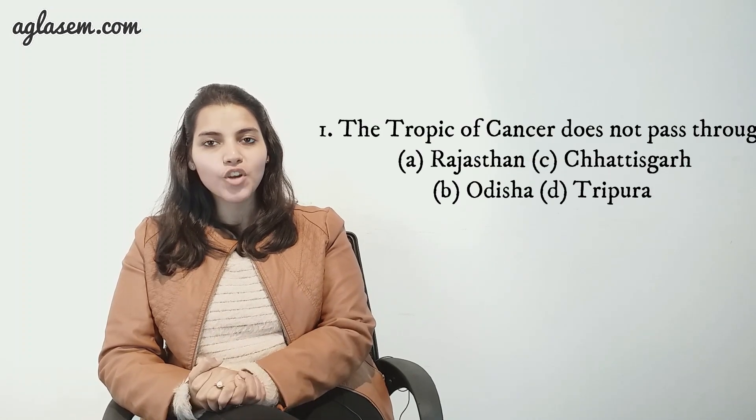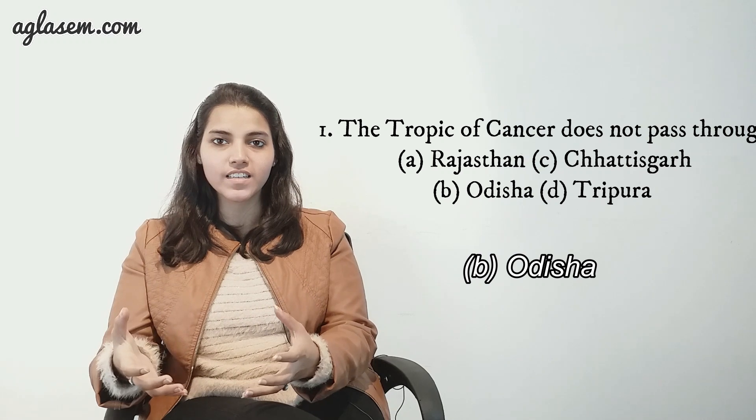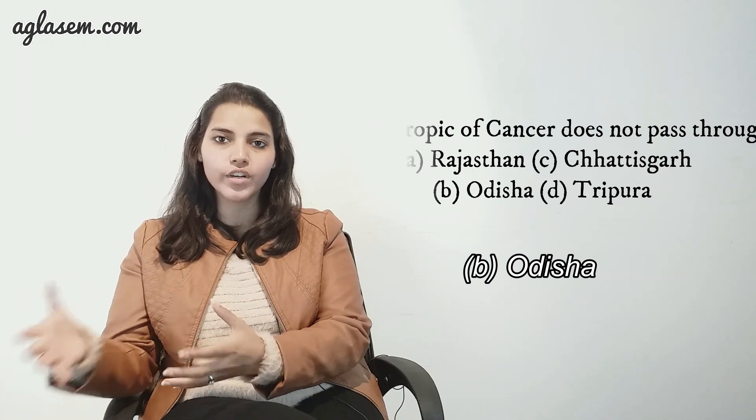First, we need to choose the right answer for the four alternatives given below. One can see the alternatives on the screen. Number one: the Tropic of Cancer does not pass through — the answer is B, Odisha.